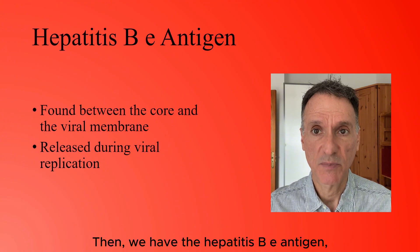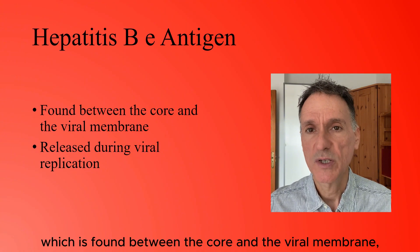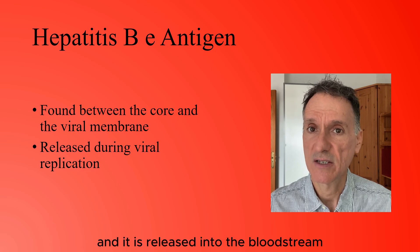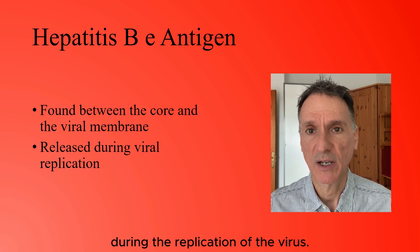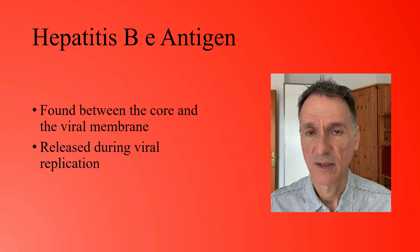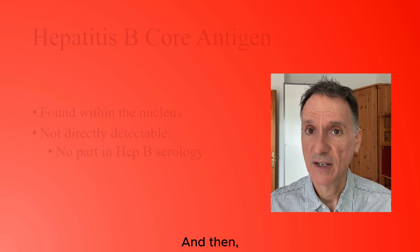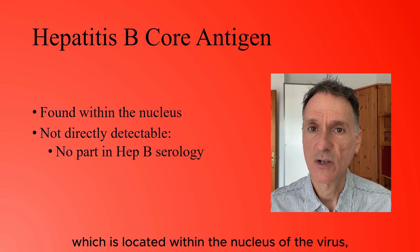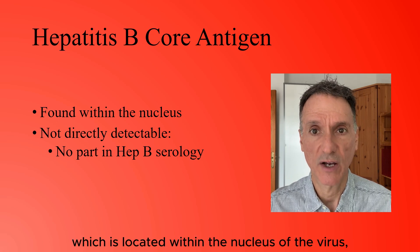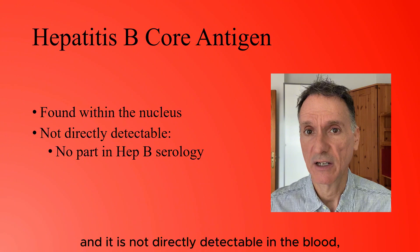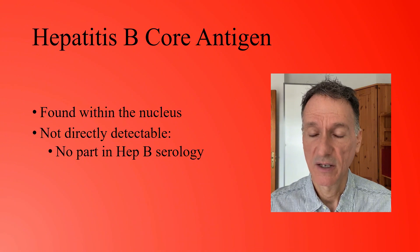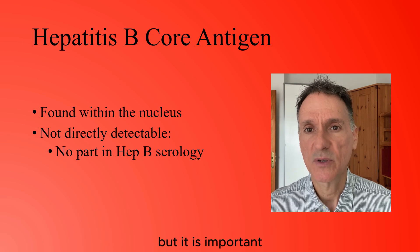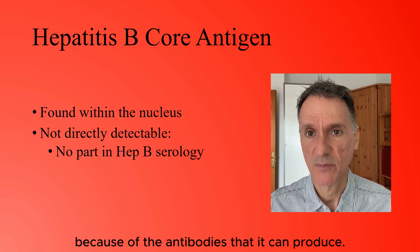Then we have the hepatitis B E antigen, which is found between the core and the viral membrane, and it is released into the bloodstream during the replication of the virus. The third antigen is the hepatitis B core antigen, which is located within the nucleus of the virus and is not directly detectable in the blood, so it plays no part in serology testing, but it is important because of the antibodies it can produce.